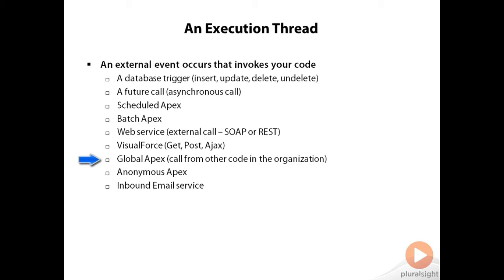Global Apex — you can expose class methods as global to an organization, which allows other applications or other code in the organization to call your code directly. Anonymous Apex — you saw this earlier when we executed code from the developer console. And inbound mail service — this is code that executes when an email is received at a specified email address. All of these represent an event on Force.com that can cause your code to start executing.